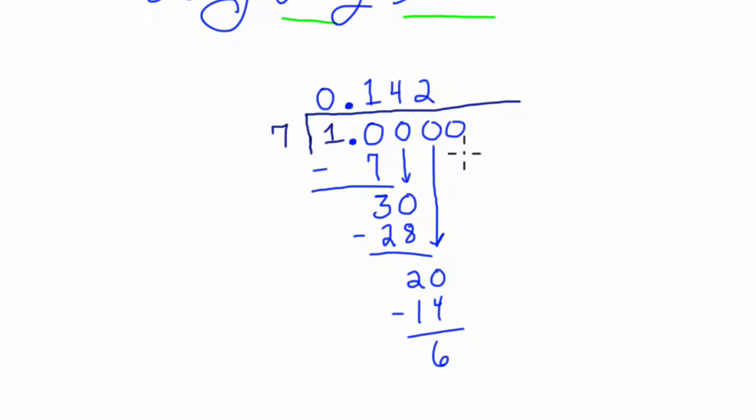Again, carry the 0 down. Thinking of how 7 goes into 6 is difficult. But we can think of 7 going into 60, right? 7 times 8. 7 times 8 is 56. And 60 minus 56 is 4.